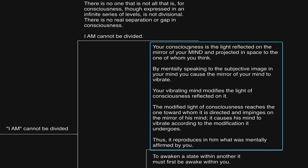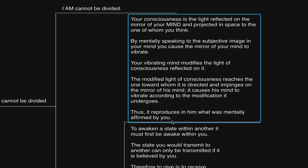As he says here, 'Your consciousness is the light reflected on the mirror of your mind and projected in space to the one whom you think. By mentally speaking to the subjective image in your mind, you cause the mirror of your mind to vibrate. Your vibrating mind modifies the light of consciousness reflected on it. The modified light of consciousness reaches the one toward whom it is directed and impringes on the mirror of their mind. It causes their mind to vibrate according to the modification it undergoes. Thus, it reproduces in them what was mentally affirmed by you.'